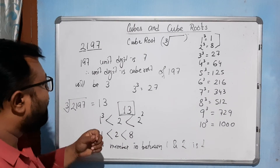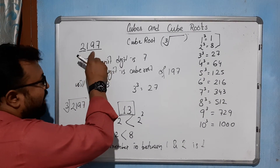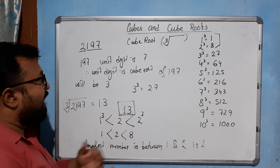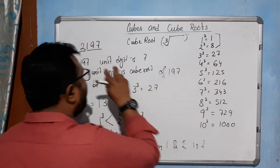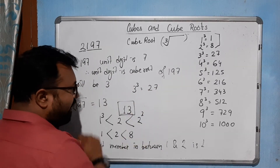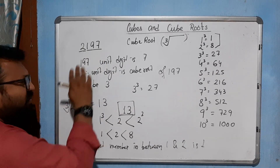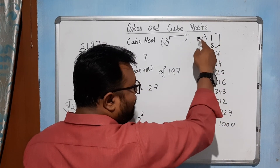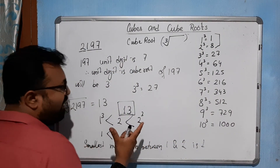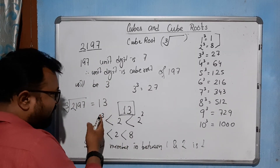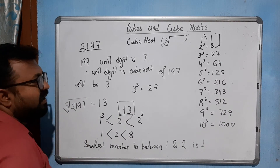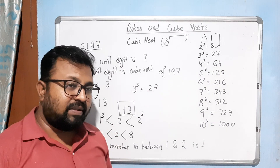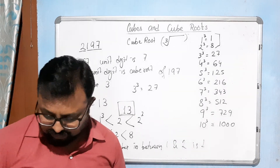To summarize: we start pairing groups — the last 3 digits (197) form one group, the remaining part is 2. For 197, whose cube ends with 7? That's 3, so the unit digit of the cube root is 3. For the 2 part, it falls between 1³ and 2³ (1 and 8), and the smallest value is 1, so the tens place is 1. Therefore the cube root of 2197 is 13. Hope you have understood this explanation. Thank you.